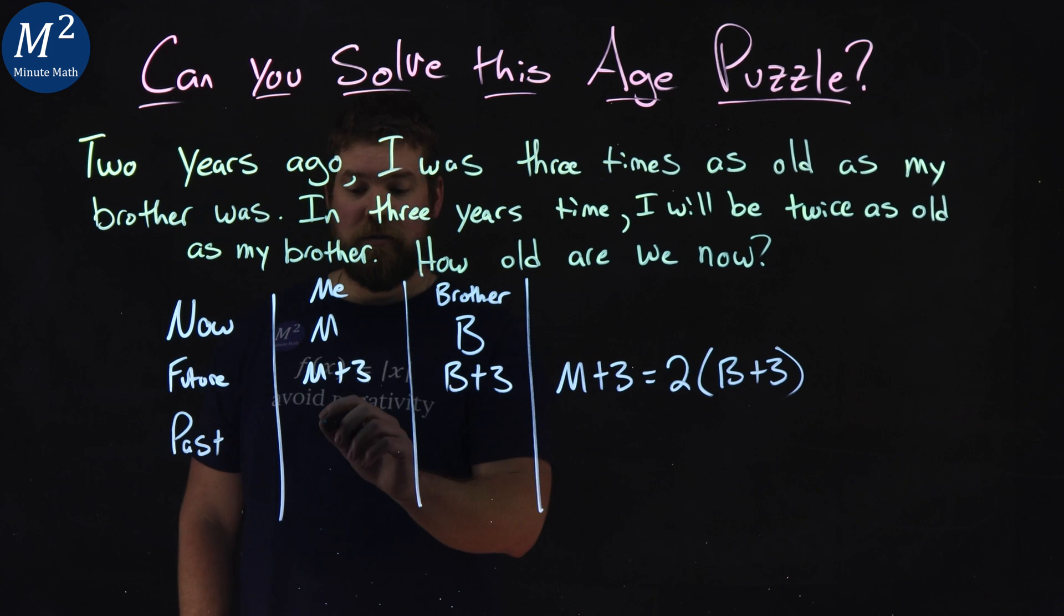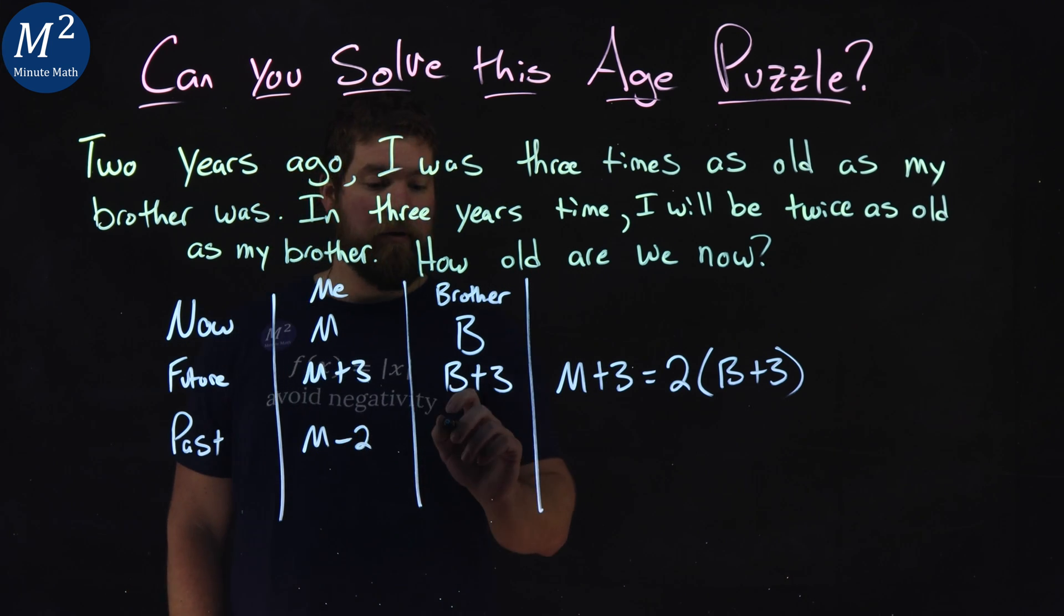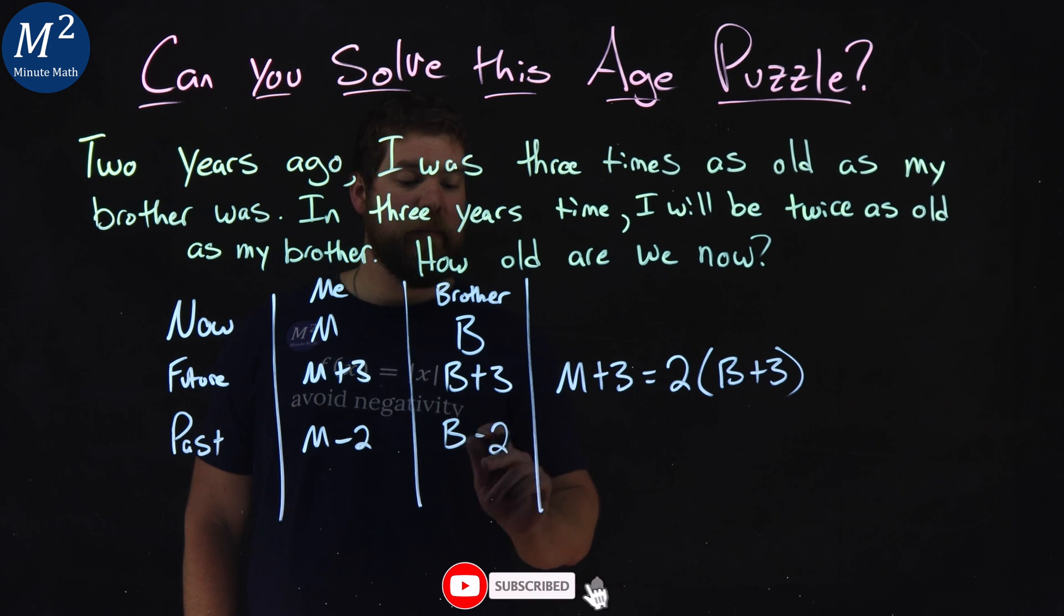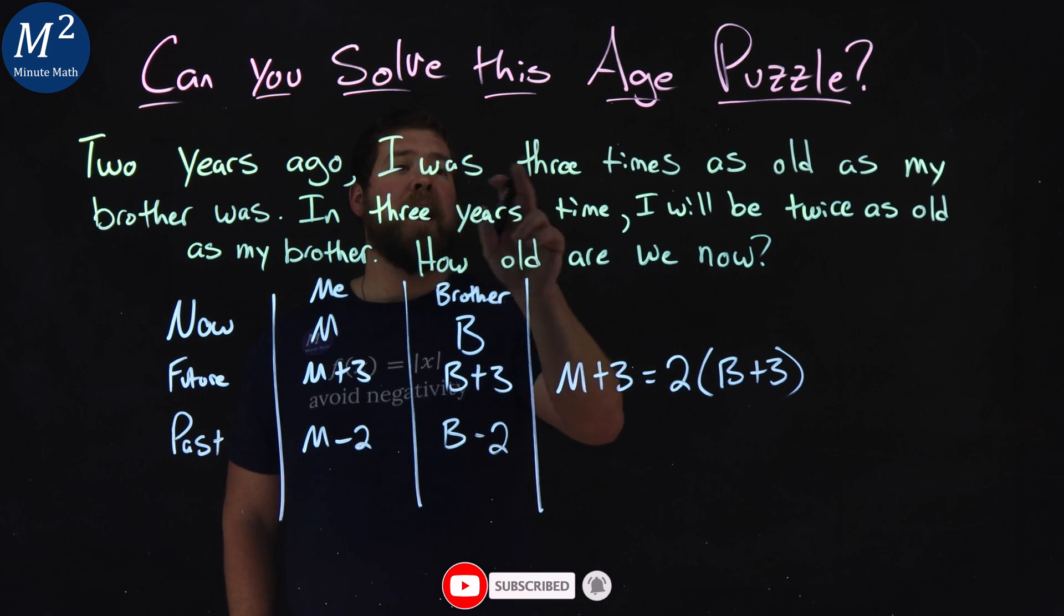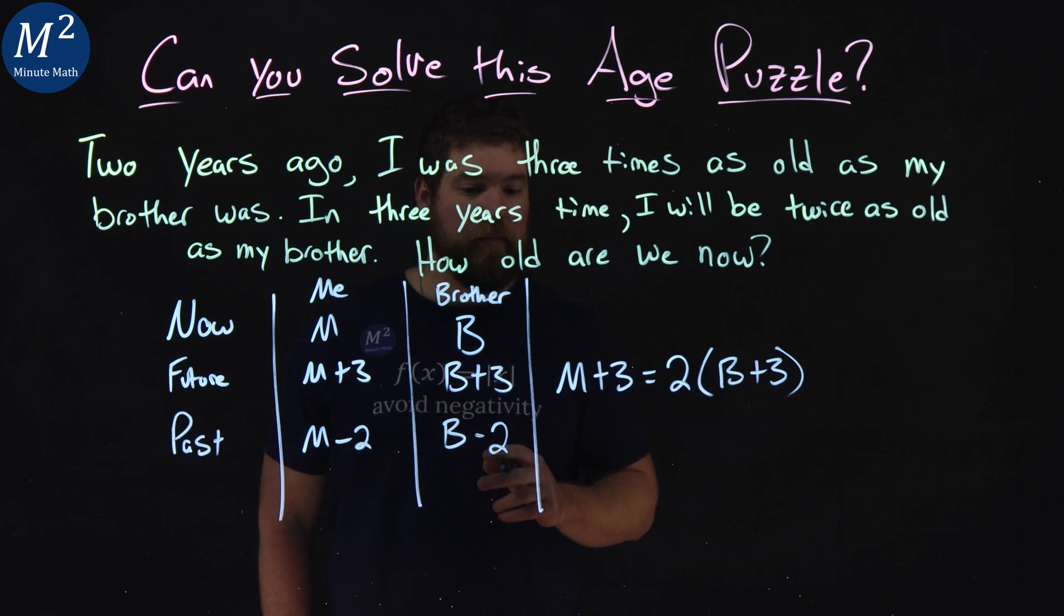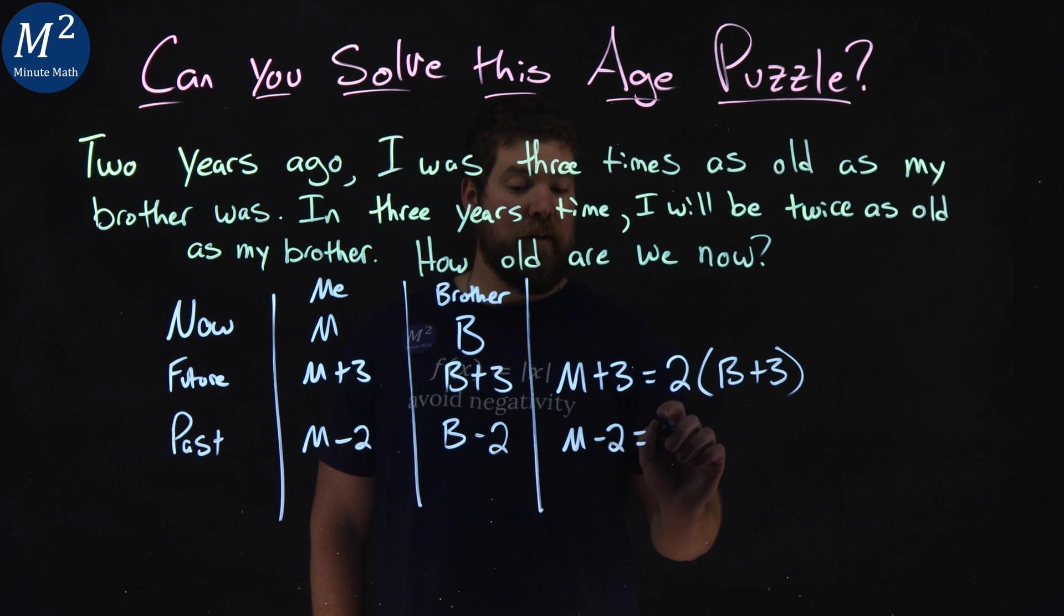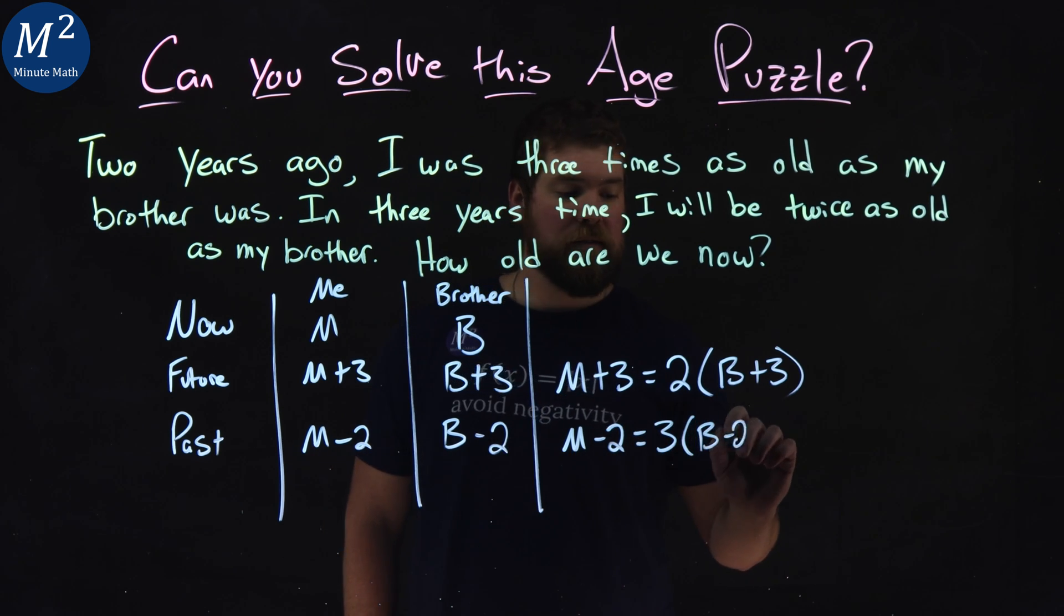So in the past, they said two years ago, so my age would be my current age minus two, and my brother's would be current age minus two. And I said two years ago, I was three times as old as my brother was. So my age, M minus two, is equal to three times my brother's age, B minus two.